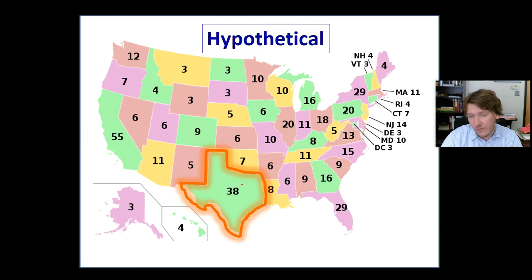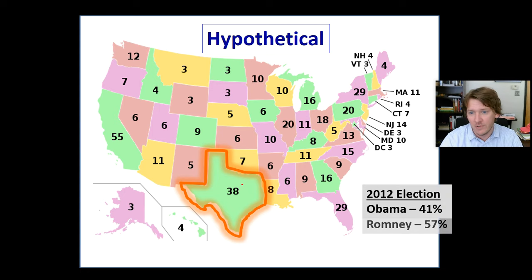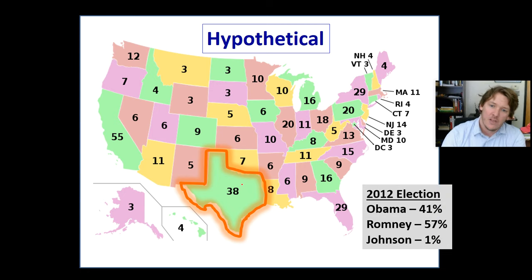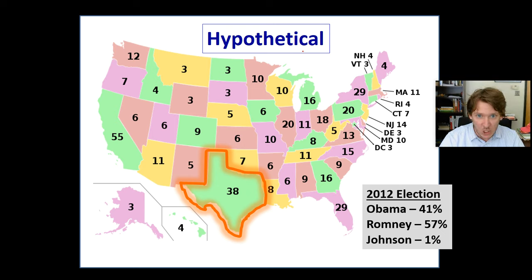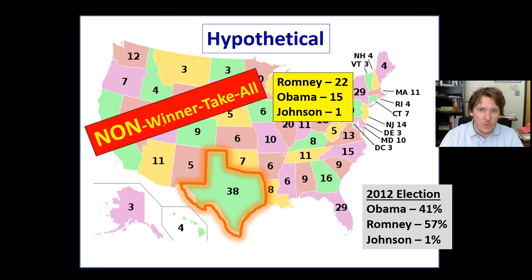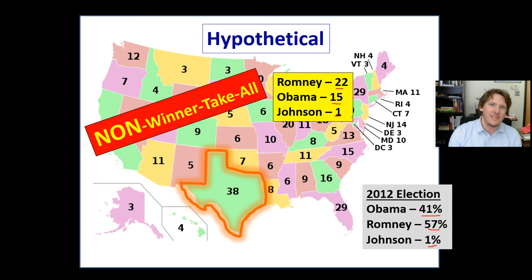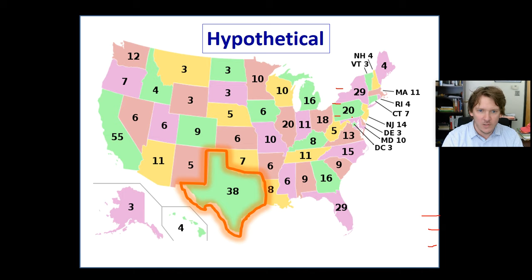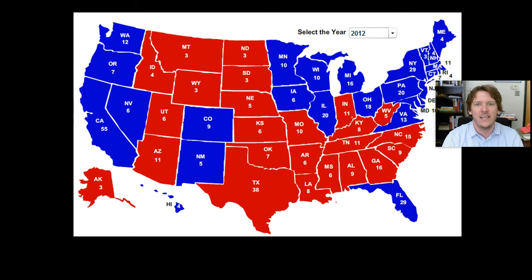If you want to argue about it, here's what the alternative would look like. Obama gets 41% of the vote, Romney 57%, Johnson 1%. If we got rid of winner-take-all — this is hypothetical — we'd say: Romney based on 57% gets 22 points, Obama based on 41% gets 15 points, and Johnson gets 1 point. That is how it would be calculated if you changed the system. But we're not considering that. We're sticking with winner-take-all: if you get the most votes in that state, you win that state and get all of its points.